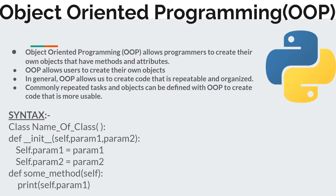Object-oriented programming allows programmers to create their own objects that have methods and also attributes. OOP allows users to create their own objects. In general, OOP allows us to create code that is repeatable and organized with the help of objects.